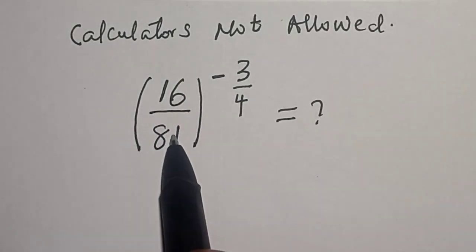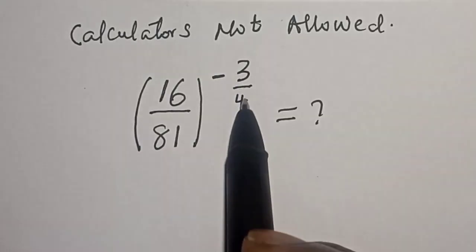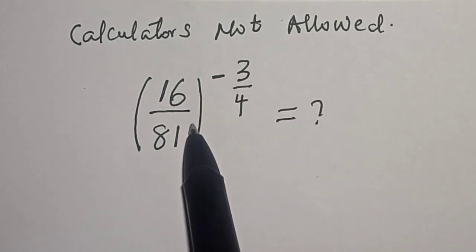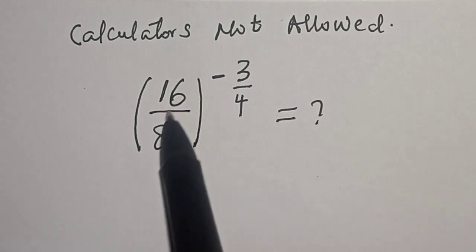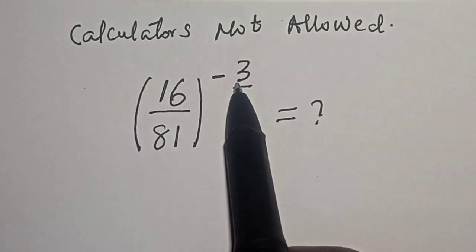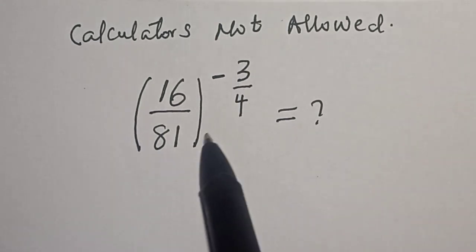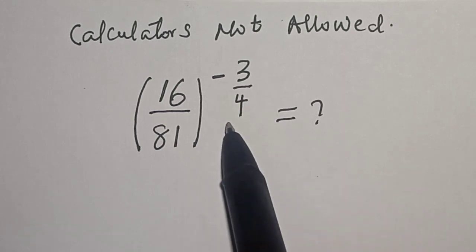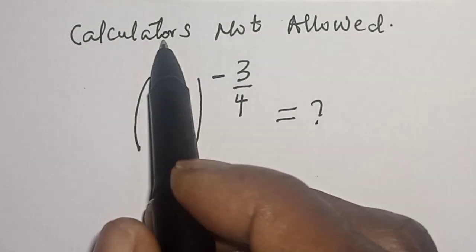16 divided by 81 raised to power minus 3 over 4 is equal to what? Hi everyone, welcome to my class. In this class we want to simplify this math question: 16 divided by 81 all to the power of minus 3 over 4. But before we proceed, please don't forget to like, share, comment and subscribe.